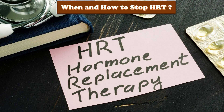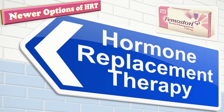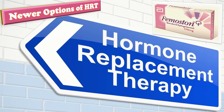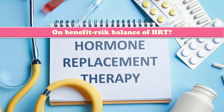Newer preparations of HRT include femoston, a combination of estradiol and dydrogesterone, which has the advantage of being more metabolically friendly. Another preparation is conjugated equine estrogen with bazedoxifene; studies show that bazedoxifene protects the endometrium against endometrial hyperplasia and carcinoma.